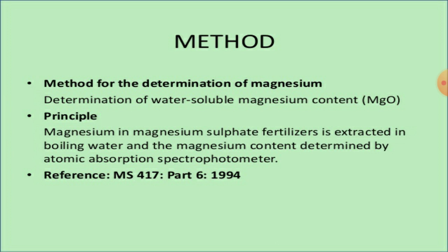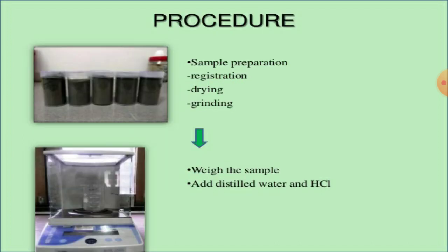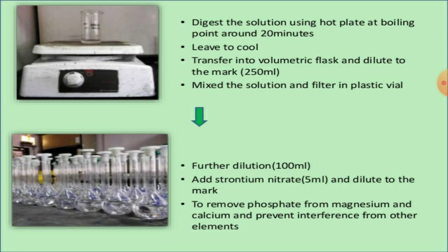For the determination of water-soluble magnesium content — magnesium oxides — the principle is that magnesium in magnesium sulfate fertilizers is extracted in boiling water and the magnesium content is determined by atomic absorption spectrophotometer. The procedure involves: sample preparation, registration, drying, grinding, weighing, adding distilled water, sealing, and digesting the solution using a hot plate at boiling point for around 20 minutes.